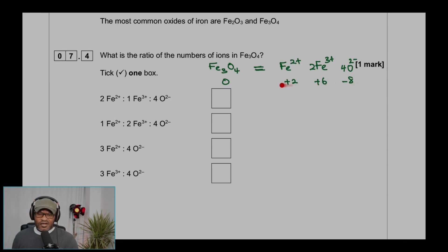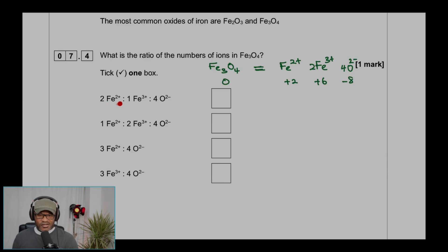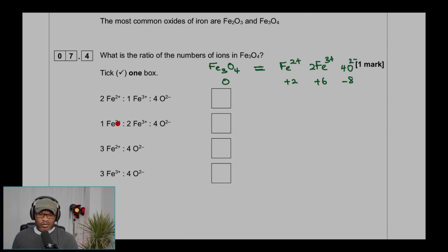So the correct combination is: 1 × Fe²⁺, 2 × Fe³⁺, and 4 × O²⁻. The other combination (+3 and 2 × +2) gives +7, which doesn't balance. Therefore the ratio of Fe²⁺ : Fe³⁺ : O²⁻ ions in Fe₃O₄ is 1 : 2 : 4.